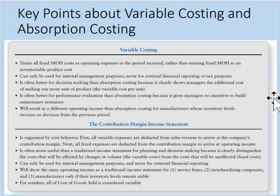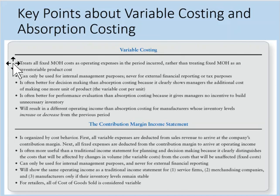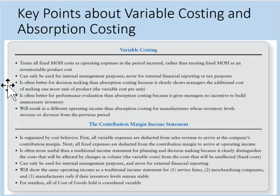This chart provides a nice summary of the key points between variable costing and absorption costing. With variable costing, all fixed manufacturing overhead costs are treated as operating expenses in the period incurred rather than as an inventoriable product cost. It can only be used internally, never for external reporting, and it often results in better decision-making than absorption costing because it gives managers the additional cost of making one more unit — the variable cost per unit.